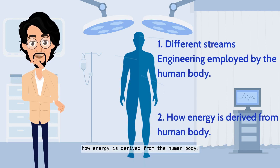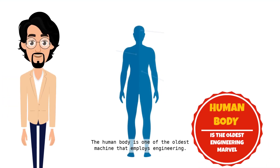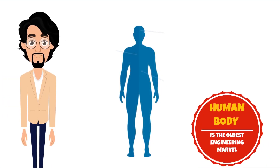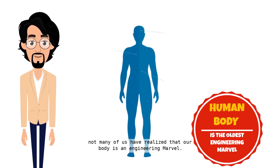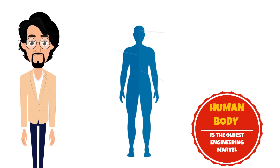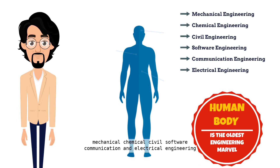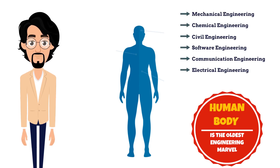We will also see how energy is derived from the human body. The human body is one of the oldest machines that employs engineering. Though being the oldest, not many of us have realized that our body is an engineering marvel. So come, let us see how mechanical, chemical, civil, software, communication, and electrical engineering are being utilized by the human body.